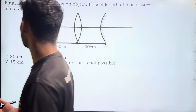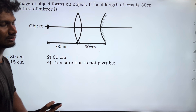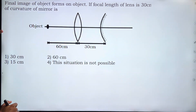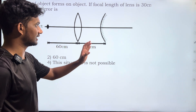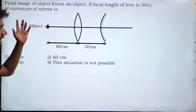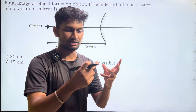The question is: the final image of an object forms on the object itself. If the focal length of the lens is 30 cm, find the radius of curvature of the mirror. There is a photo of it — there is a convex lens, there is a mirror, and there is an object. If the problem is solved, the students have to answer the solution.